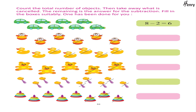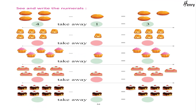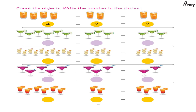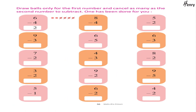Count the total number of objects, then take away what is cancelled — the remaining is the answer for the subtraction. Fill in the boxes suitably; one has been done for you. See and write the numerals. Count the objects and write the numbers in the circle. Draw balls only for the first number, and cancel as many as the second number to subtract; one has been done for you.